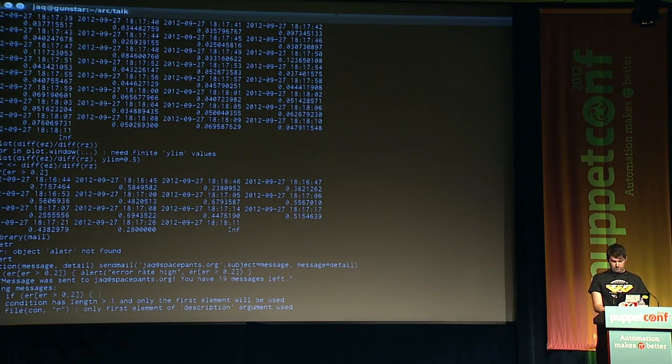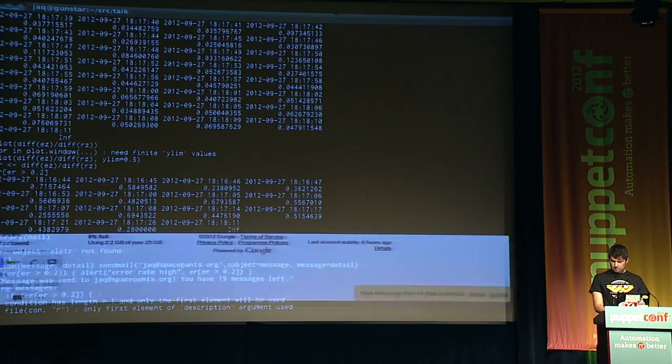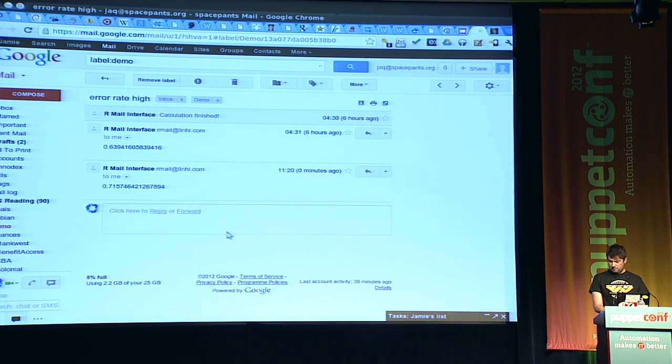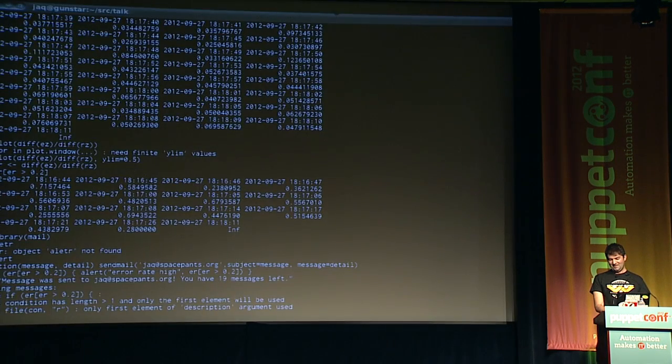So we'll put that in a variable called er. And then we can say er where er is greater than 0.2. And we get some values. So now if that, then alert. Oh, I better load that library up. So I have this function alert, which sends me an email. So if, what do you want to alert with? Oh yeah. Error rate. Hi. And then stick in the contents. All of the results, these results.